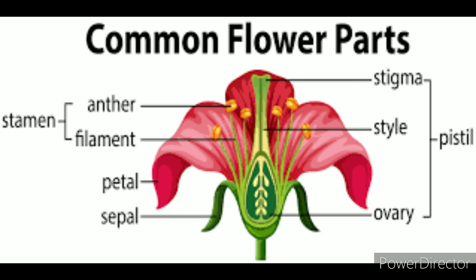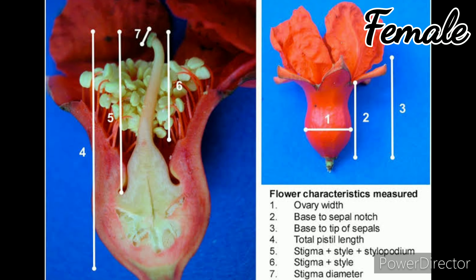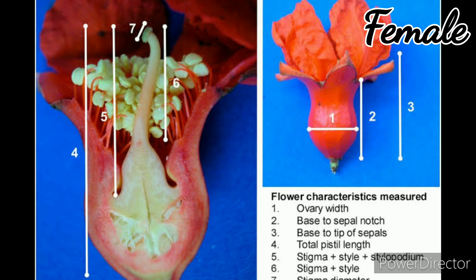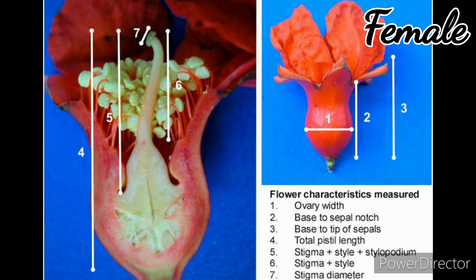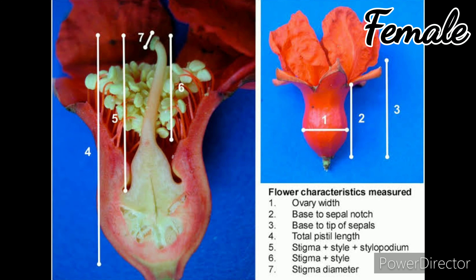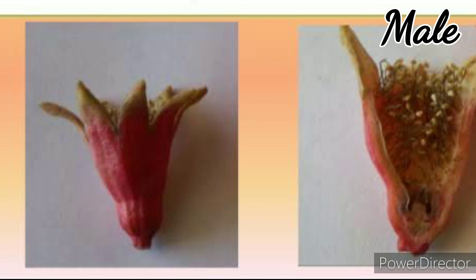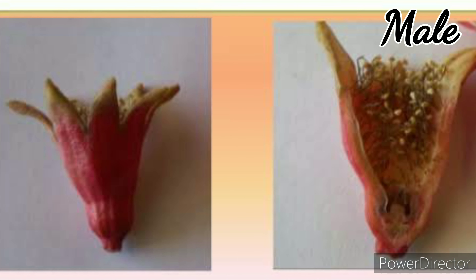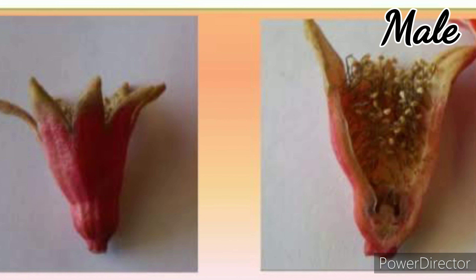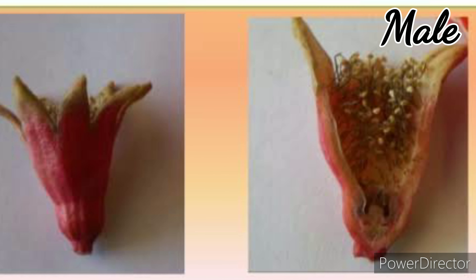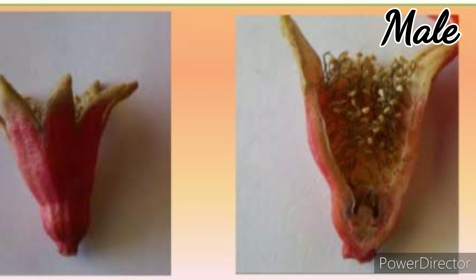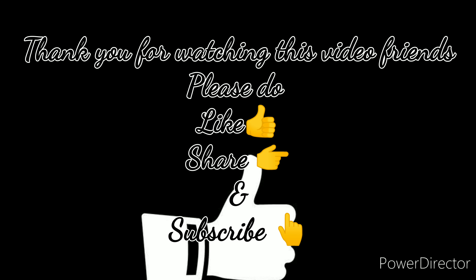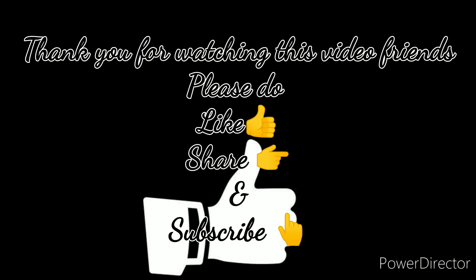We are going to use the female flower. The stigma is the key part we focus on. The pollen grains will start pollination — the stigma receives the pollen grains, which are normally transferred by insects. This video is very important. Please like, share and subscribe.